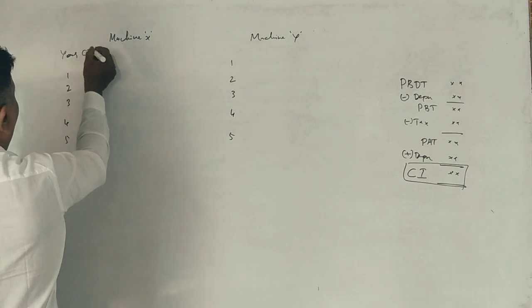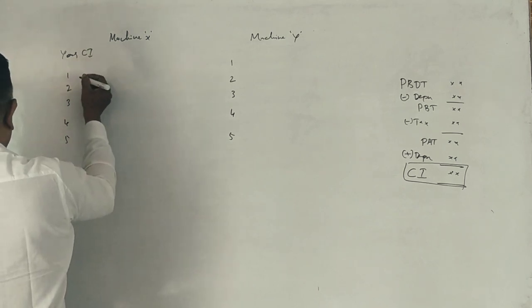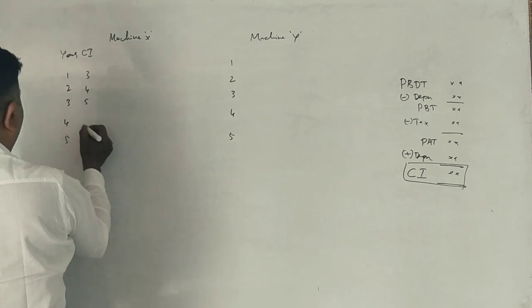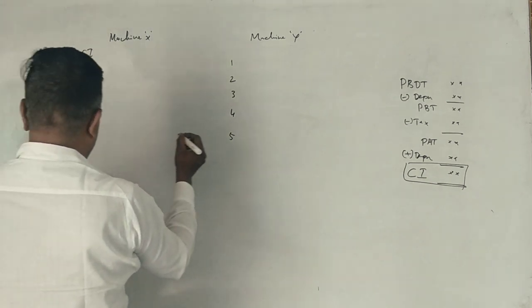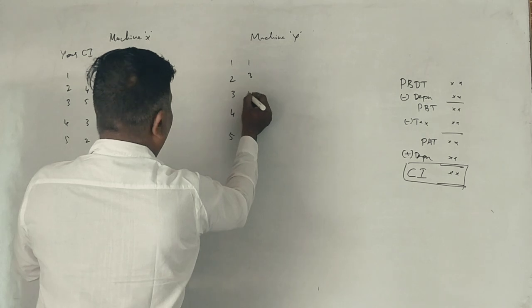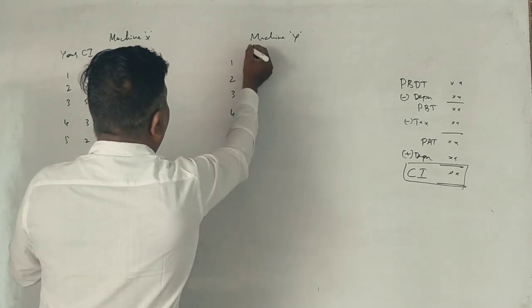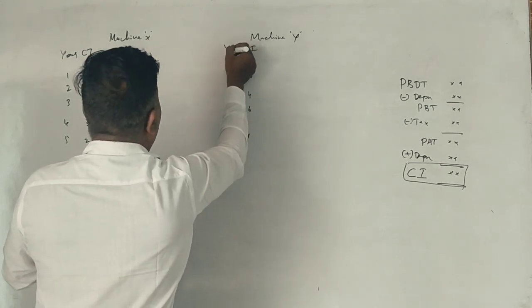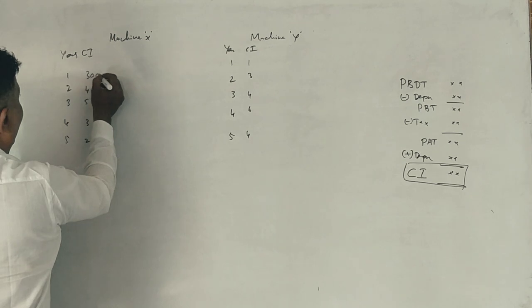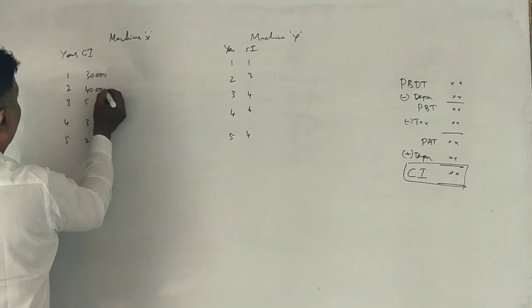Enter the values. 30, 40, 50, 30, 20. Here: 10, 30, 40, 60, 40. These are cash inflows. We are at 40.